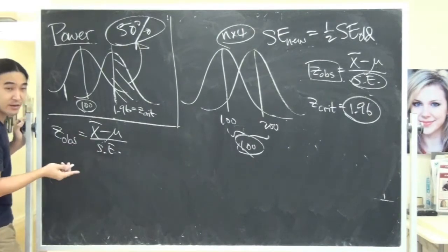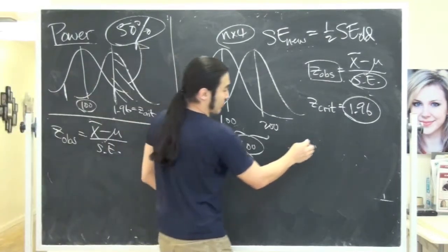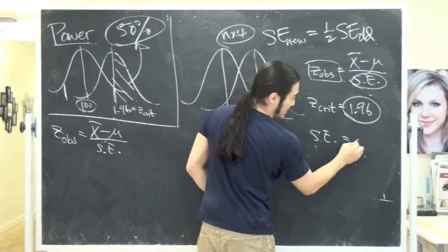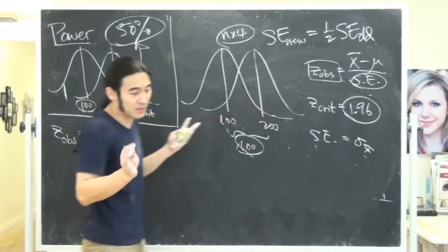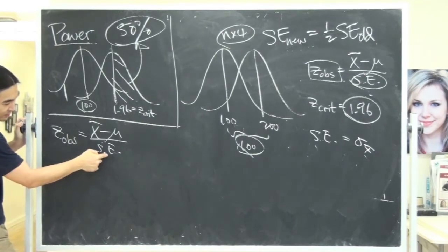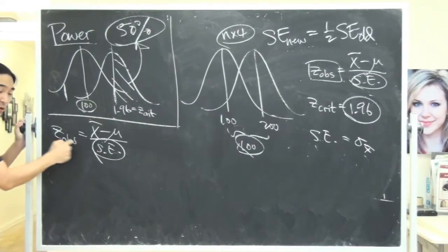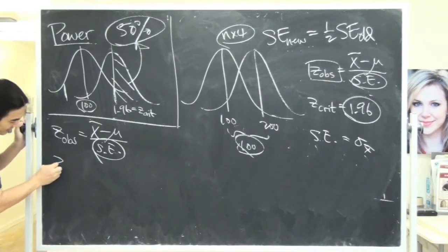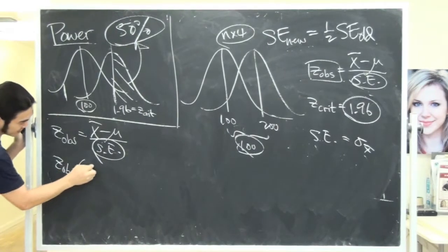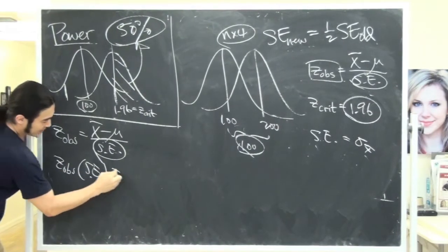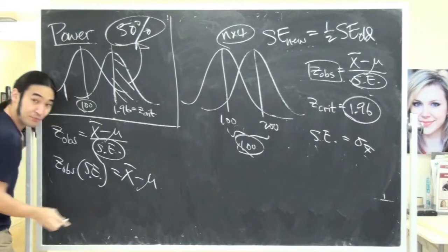But, by the way, standard error, I believe he writes standard error in these situations as sigma x bar. Same thing. So what I want to do is this. First, this is just a number. So is it okay if I multiply both sides by that number? So then I get z-observed times the standard error is equal to x bar minus mu.